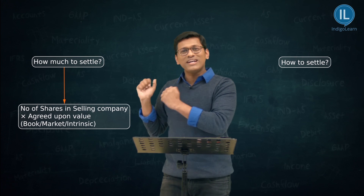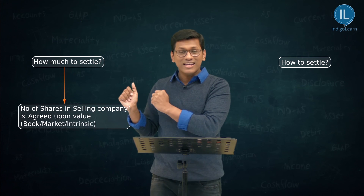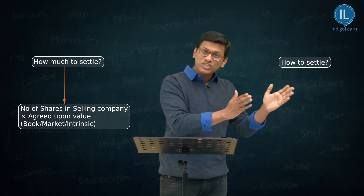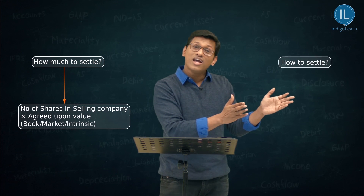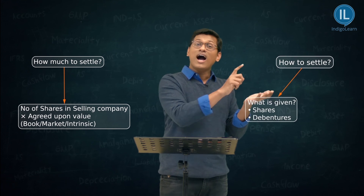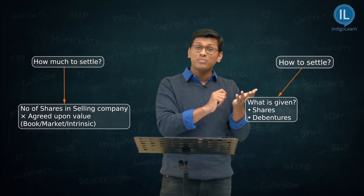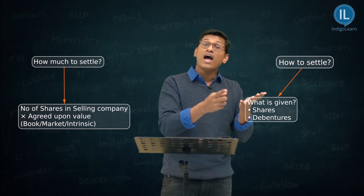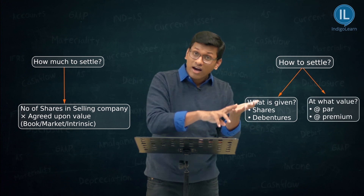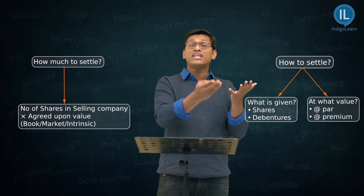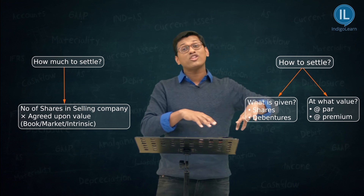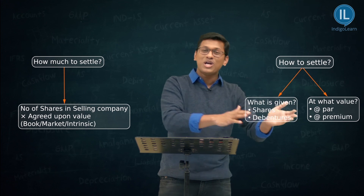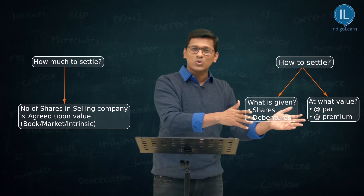First get clarity on how much to settle. After that, come to the next question: how to settle? Are we giving equity shares of the new company? Are we giving preference shares? If we are giving equity shares, are we giving them at par (face) value or at a premium? Based on that, you determine how many shares have to be given.